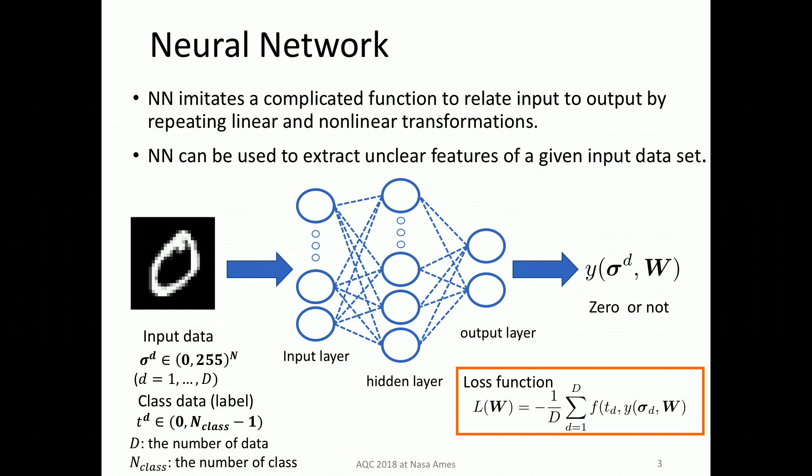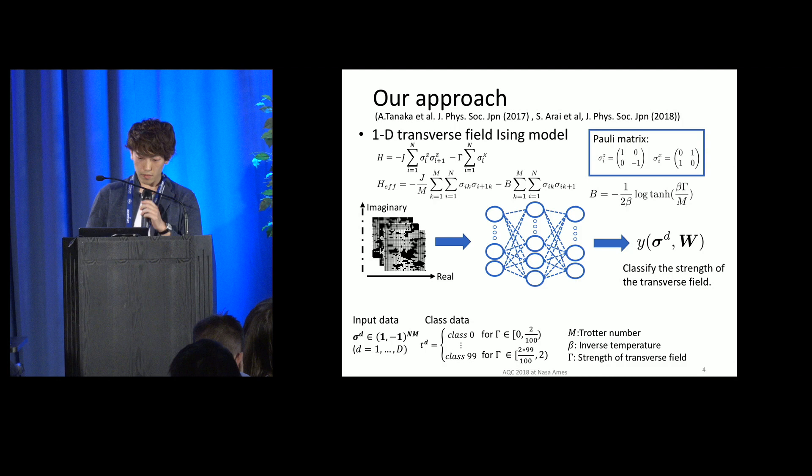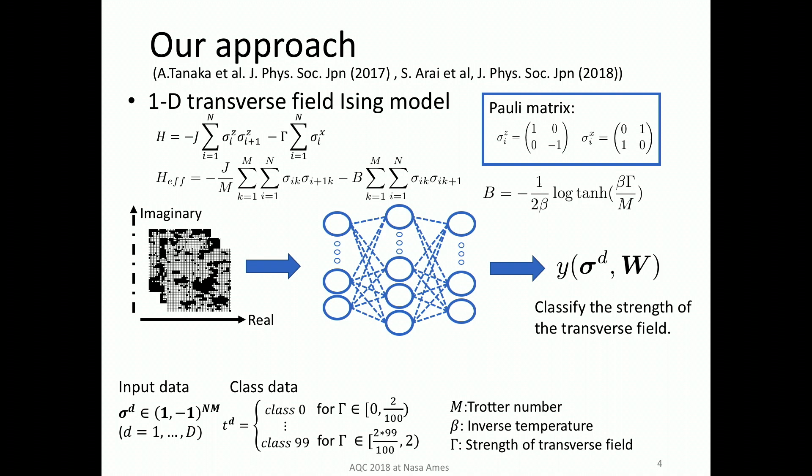W is the weight parameter. By doing so, the neural network extracts features about the output from the input value. Let's move on to our approach to detect quantum phase transition. This is our approach. We have done some study to detect the phase transition, but in our approach, we don't teach the critical point to the neural network.